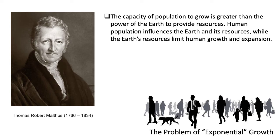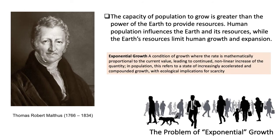According to Dr. Malthus, population growth is effectively geometric or exponential, since the multiple offspring of a single mating pair of animals or people are each capable of producing multiple offspring themselves. On the other hand, Malthus argued that the food base for the growing population over time is essentially fixed or amenable to slight alterations through arithmetic or linear expansion. For example, food supplies can grow by expanding agricultural lands or by using technology to increase agricultural production. But over time, population growth, which is exponential, would still outpace food production, which is linear.